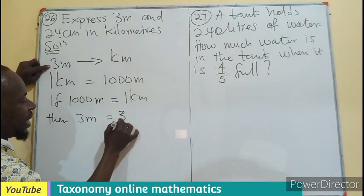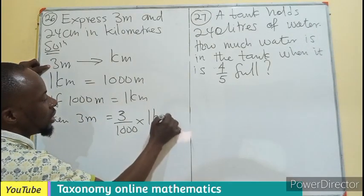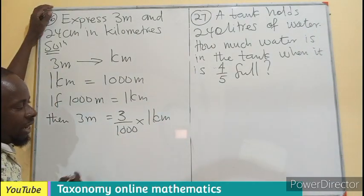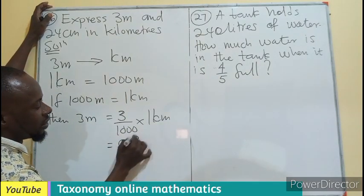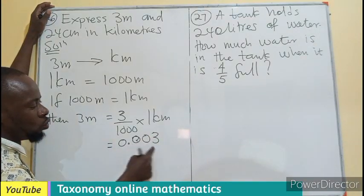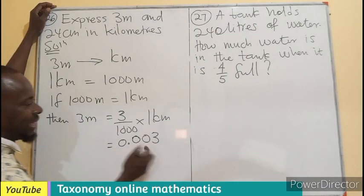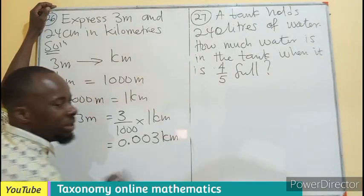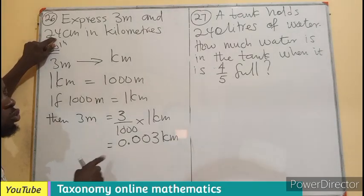We divide: 3 meters over 1000 meters times 1 kilometer. Since there are three zeros, we get 0.003. You can get that with your calculator. So 3 meters equals 0.003 kilometers.